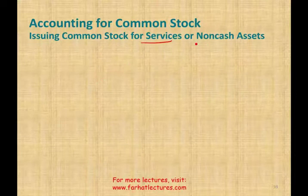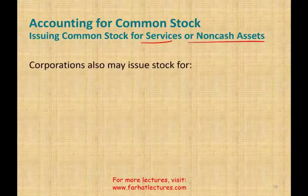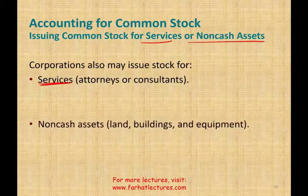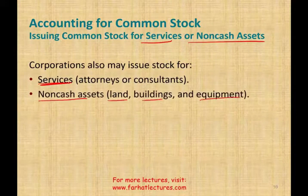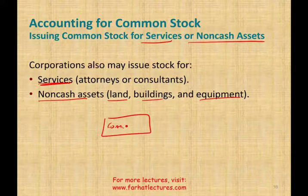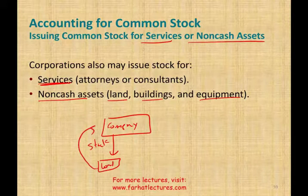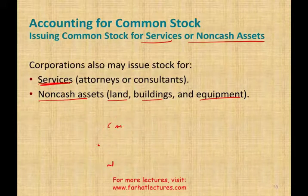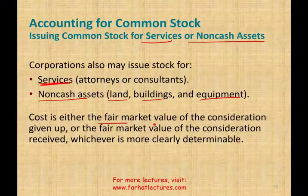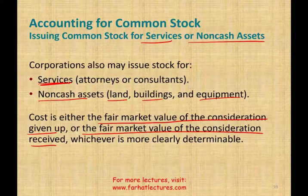Now, issuing common stock for services and non-cash assets. A corporation can issue stocks not only for cash — it can issue stocks for services or non-cash assets such as land, buildings, and equipment. The company issues stock and in return receives land instead of cash. The cost is either the fair value of the consideration given up or the fair value of the consideration received, whichever is more clearly determinable.